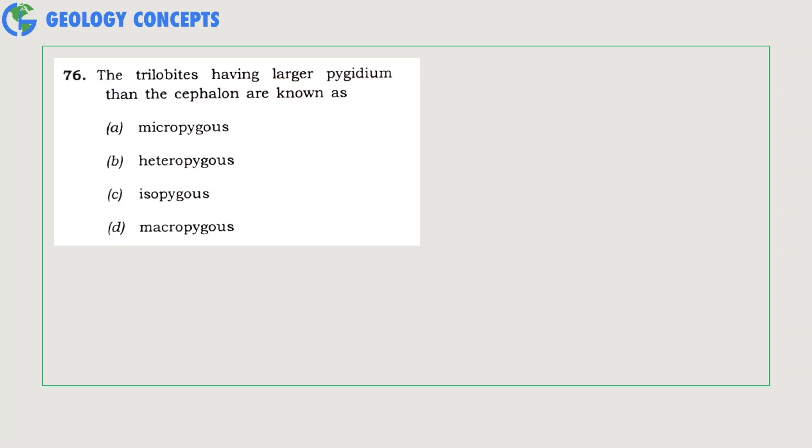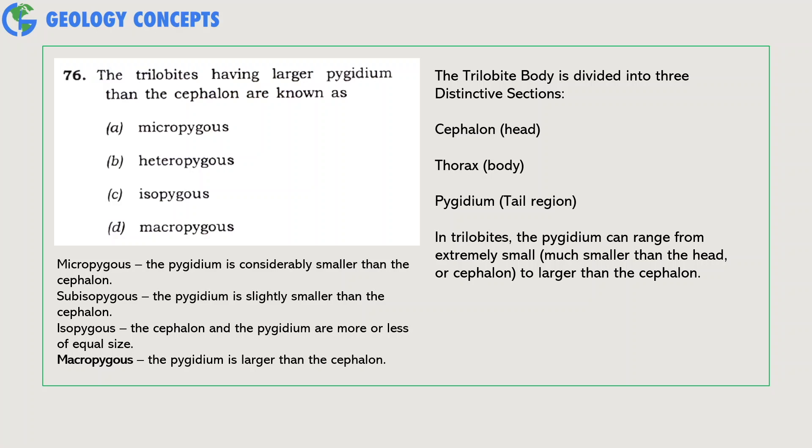The trilobites having larger pygidium than the cephalon are known as what: micropygous, heteropygous, isopygous, or macropygous? The trilobite body is divided into three distinct sections: the cephalon (head), thorax (body), and pygidium (tail region). In micropygous species, pygidium is considerably smaller than the cephalon. In sub-isopygous, the pygidium is slightly smaller than the cephalon. In isopygous, the cephalon and pygidium are more or less of equal size. In macropygous, the pygidium is larger than the cephalon. You can see this differentiation in the diagram. So here, option D is the right answer, macropygous.